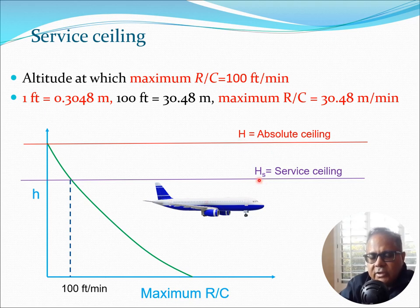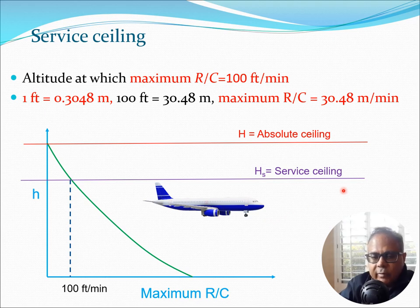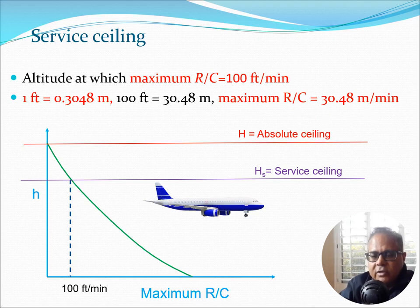We can denote the service ceiling by h subscript s and the absolute ceiling by capital H. The advantage of the service ceiling is that if you are flying at this height, you still have some rate of climb capability left. So if you encounter some unforeseen phenomena in front of you, you still have the possibility of going into a climb — something pilots generally want. As a conversion, one foot is 0.3048 meters, so 100 feet per minute is 30.48 meters per minute.